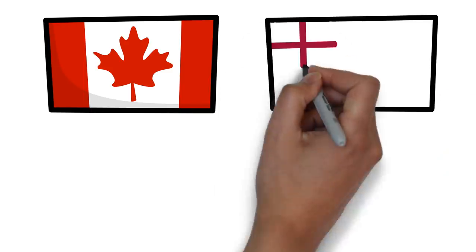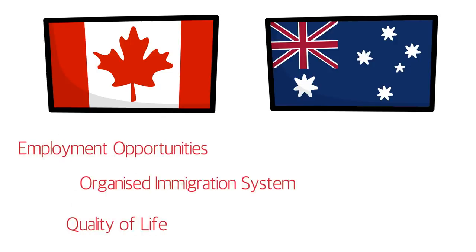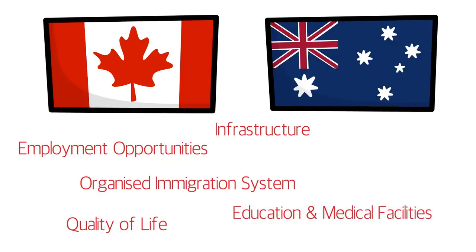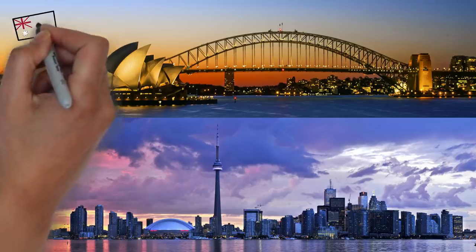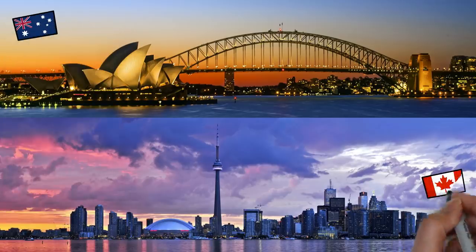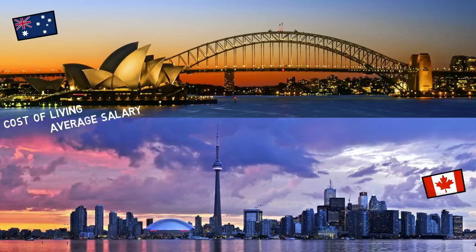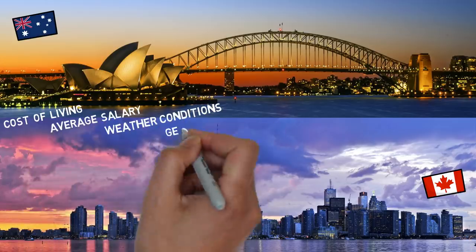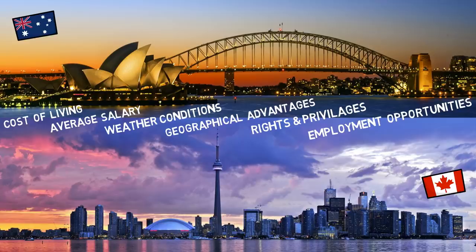I'm a permanent resident of Canada, but I'll try to be as neutral as I can. Both countries are great options to immigrate and very similar in terms of facilities offered to immigrants: quality of life, employment opportunities, organized immigration systems, infrastructure, education, medical facilities, and world-class cities. The factors we'll discuss are cost of living, average salary, weather, geographical advantages, rights and privileges, employment opportunities, and immigration eligibility.